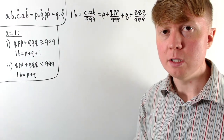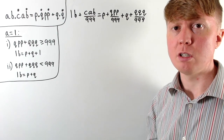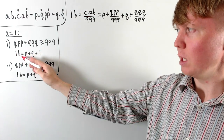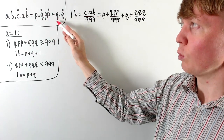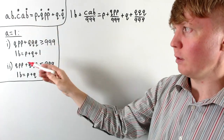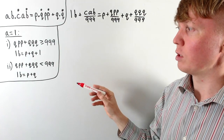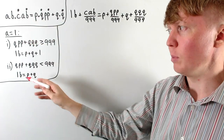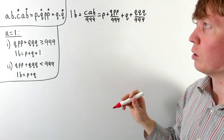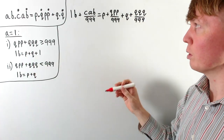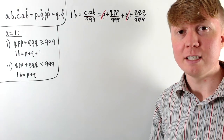Now when a is 1, we again split into two cases depending on whether the fractional parts sum to greater or less than 1. In the carry case, 1b — which really means 10 plus b — equals p plus q plus 1. We subtract p and q from our equation; 1b minus p minus q equals 1, written as 999/999. Cancelling the common denominator again gives 999 plus cab equals qpp plus qqq.